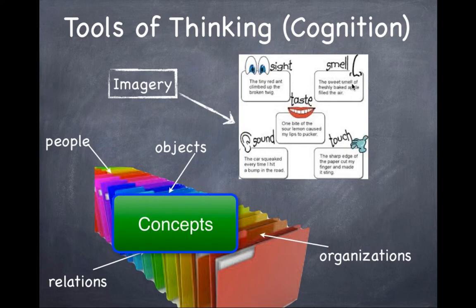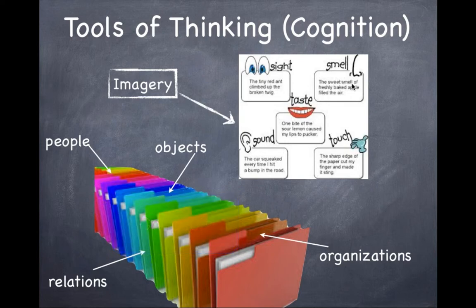Concepts are mental categories used to represent a class or group of objects, people, organizations, events, situations, or relations that share a common characteristic or attribute. For example, the concept of furniture — you know what furniture is, you can differentiate different furniture, and you can group what is and isn't furniture. With the concept of Georgian College, you know what fits within it and what doesn't. You know what a tree or dog is — and what it's not. That's a concept.